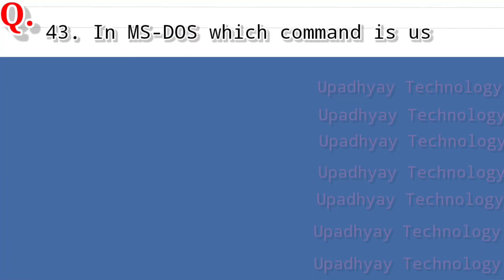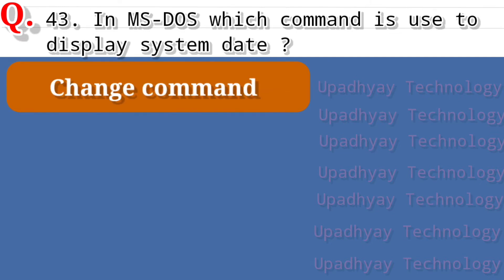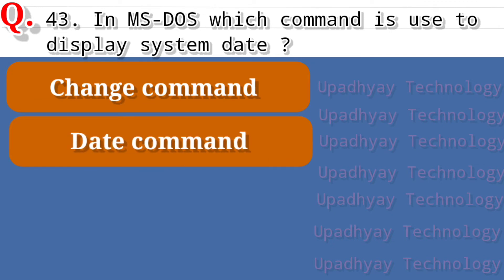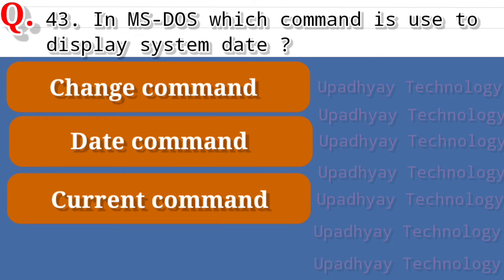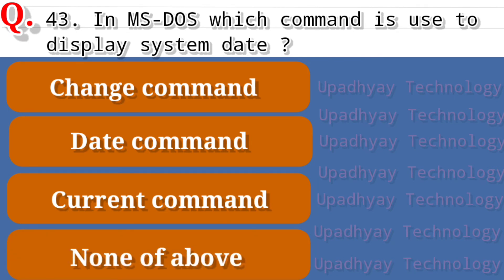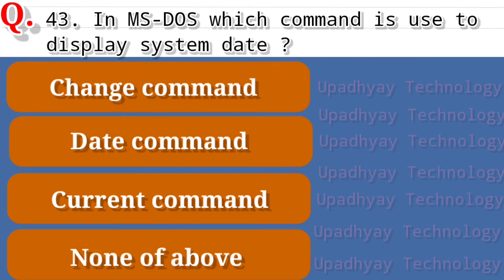Question number 43 of operating system: in MS-DOS, which command is used to display the system date? The options are Change command, second option is Date command, third option is Current command, and the last option is None of the above. The correct answer is Date command.